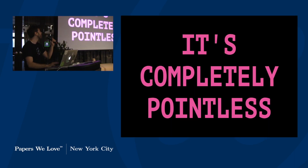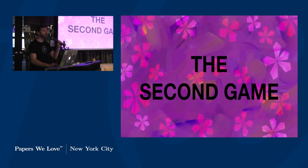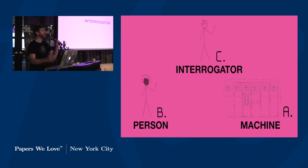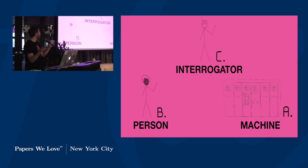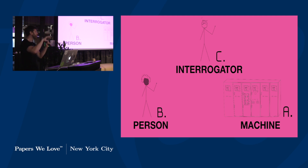The first game is completely pointless for actually understanding the second imitation game he brings up, where you have basically an interrogator once again, but this time instead of a man you have a person and a machine. The imitation game he describes is where you basically decide which one is which — which is the human, which is the machine.